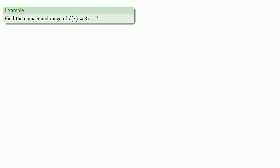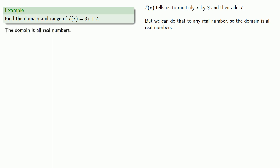How about the domain and range of f(x) equals 3x plus 7? So again, we might start by thinking about what we can't work with. Well, our function tells us to multiply x by 3 and then add 7. But we can do that to any real number, so our domain is all real numbers.